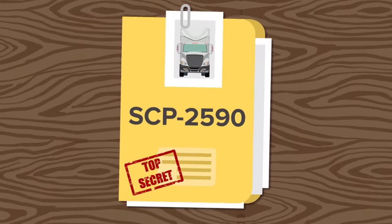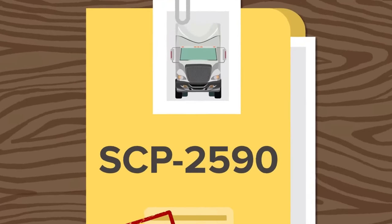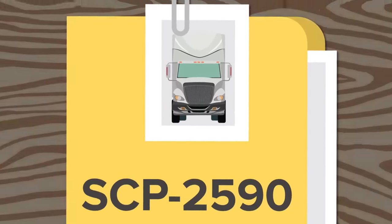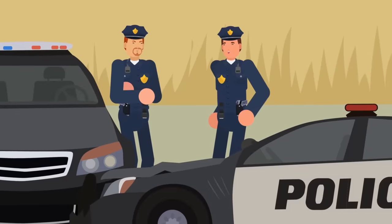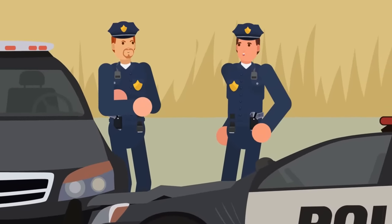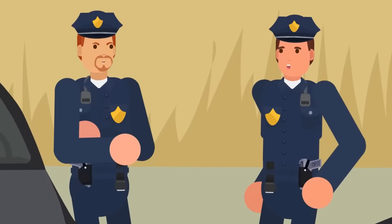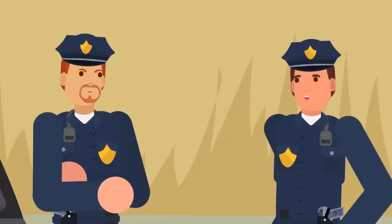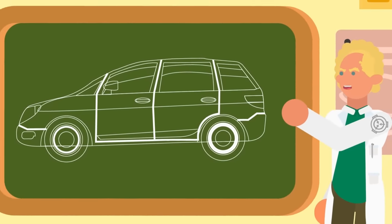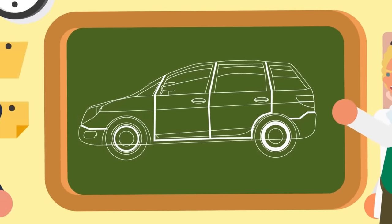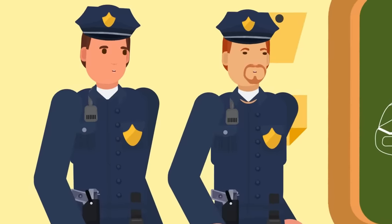SCP-2590 was first discovered by the Foundation at a routine traffic stop. Investigating a totally different anomaly in the Birmingham area, Agents Peters and Smith had been posing as local police officers. The Foundation had been trying to track down an artifact that was supposedly being smuggled across the US in the back of a nondescript station wagon.